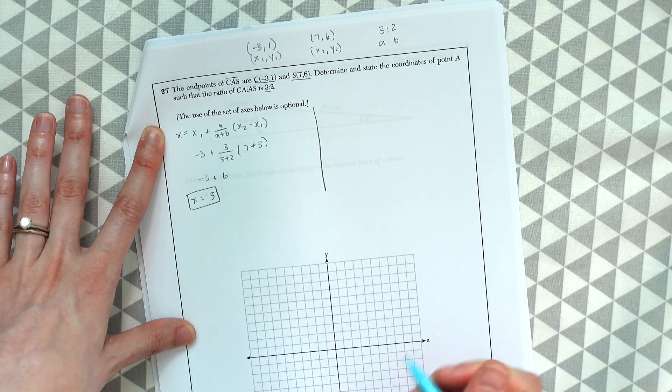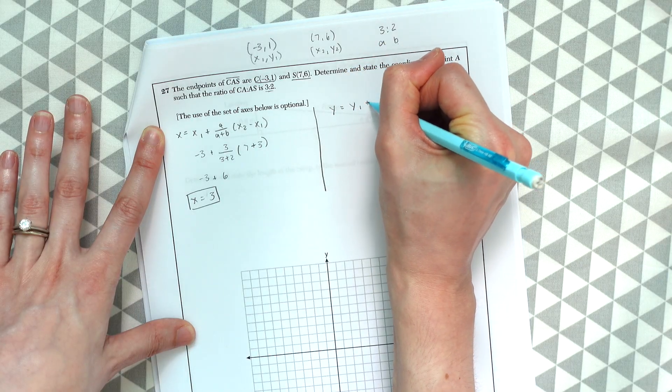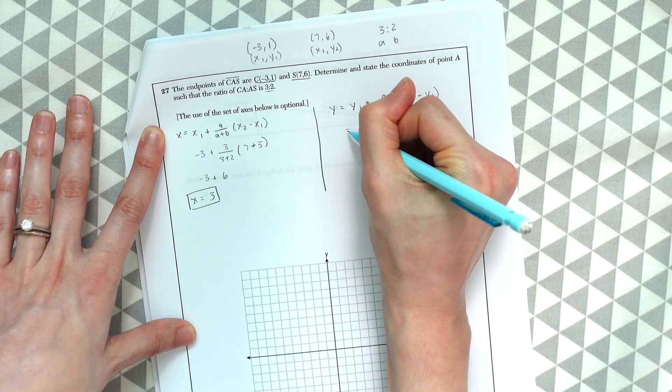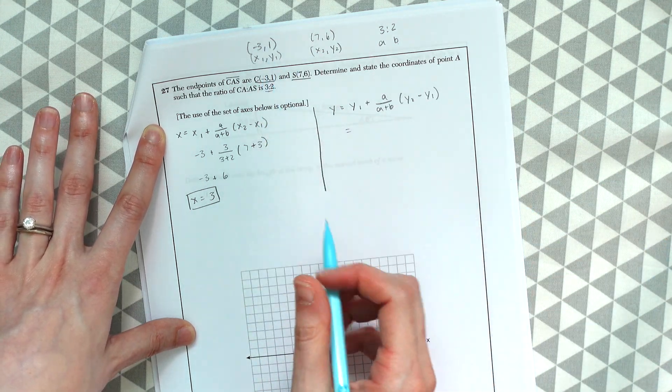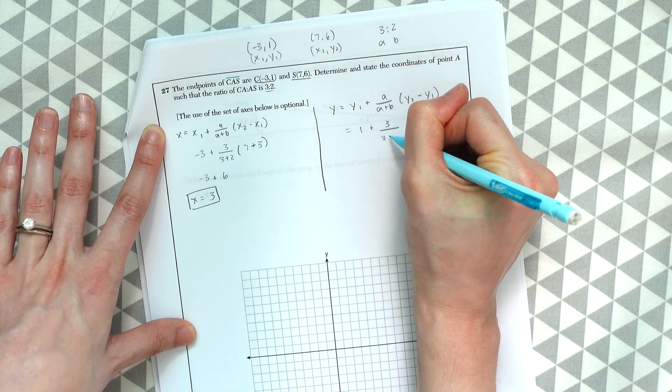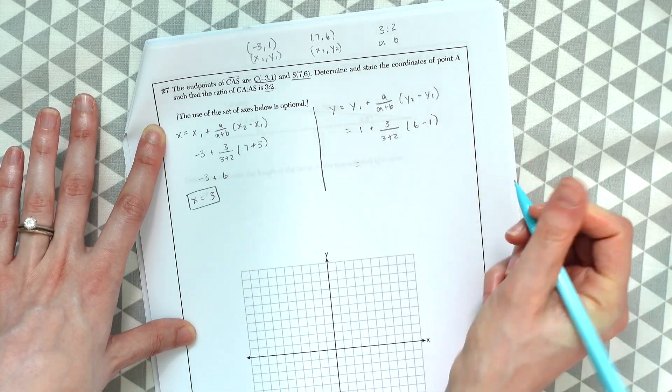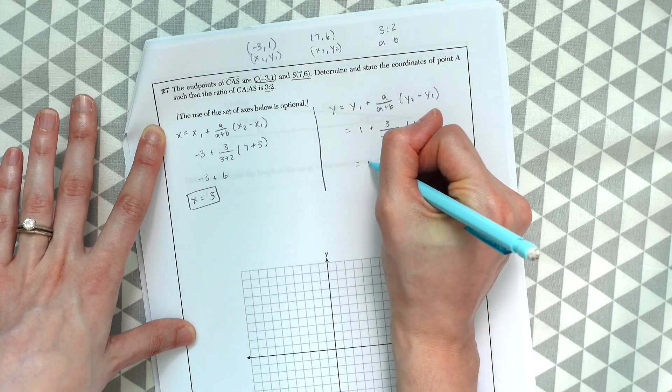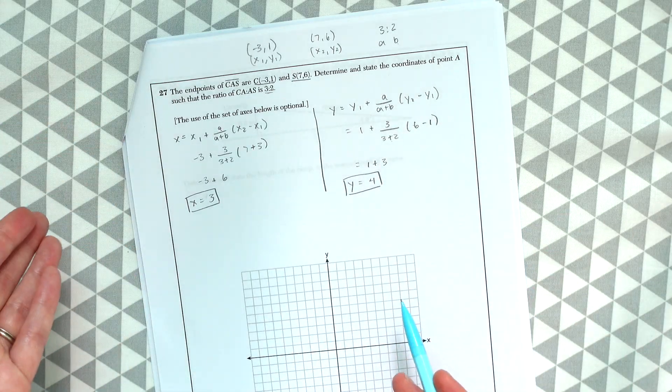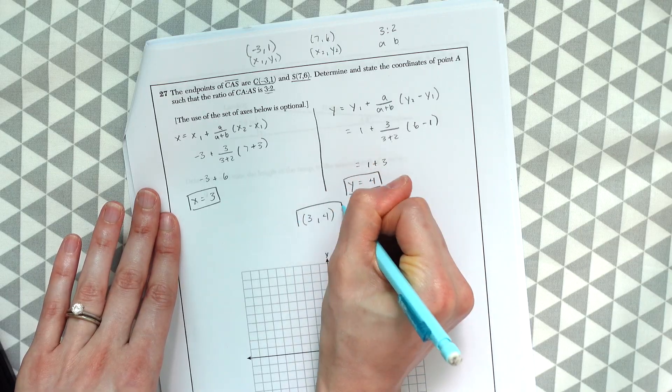We're also going to find the y value to this. So it's going to be a very similar formula but instead of x we're going to be doing y. So we have y is equal to y1 plus A over A plus B times y2 minus y1. And we're going to do the same thing filling in the values that we filled out up top. So y1 is 1 plus A, 3 over A plus B, 3 plus 2 times y2 which is 6 minus y1 which is 1. This will give us 15 divided by 5 which will give us 1 plus 3. So we'll get y is equal to 4. So now we just want to put this all together as a coordinate point. We've found the x and the y so we know this as a coordinate point will be 3 comma 4.